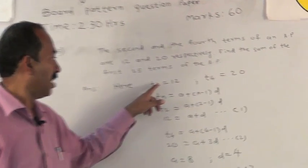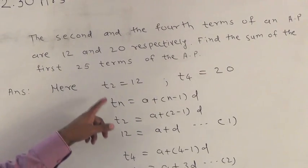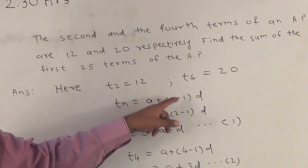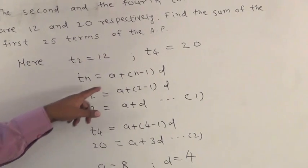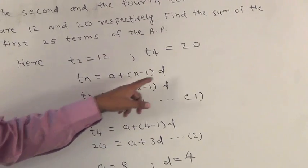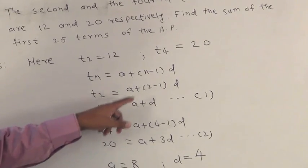Here it is given that second term is 12, fourth term is 20. The formula is TN is equal to A plus N minus 1 into D. Substituting the values, T2 is equal to A plus 2 minus 1 into D. We get the first equation 12 is equal to A plus D.